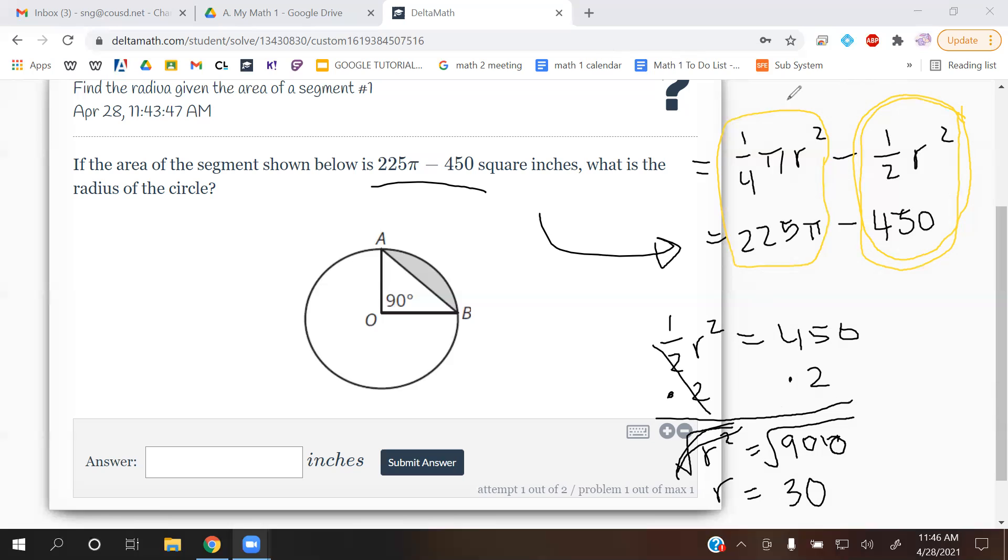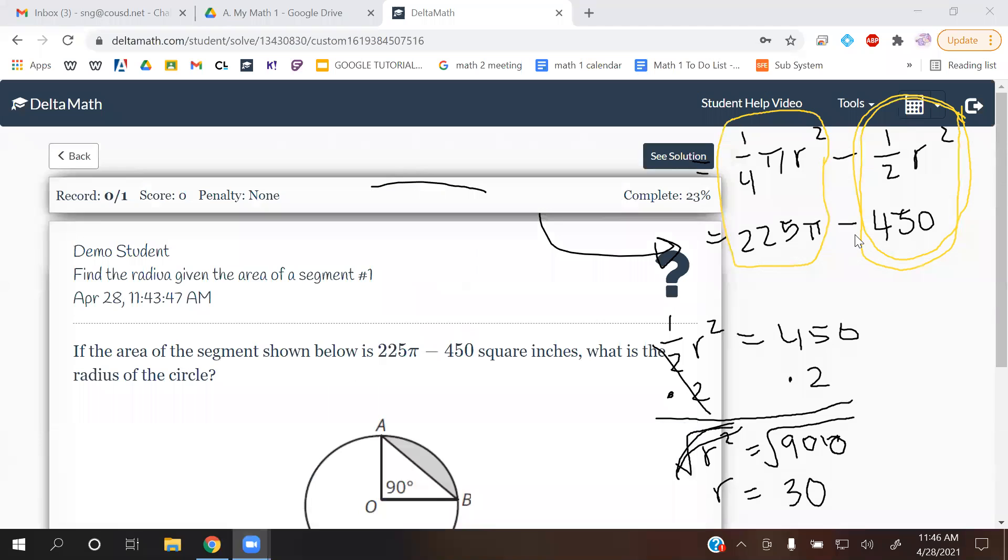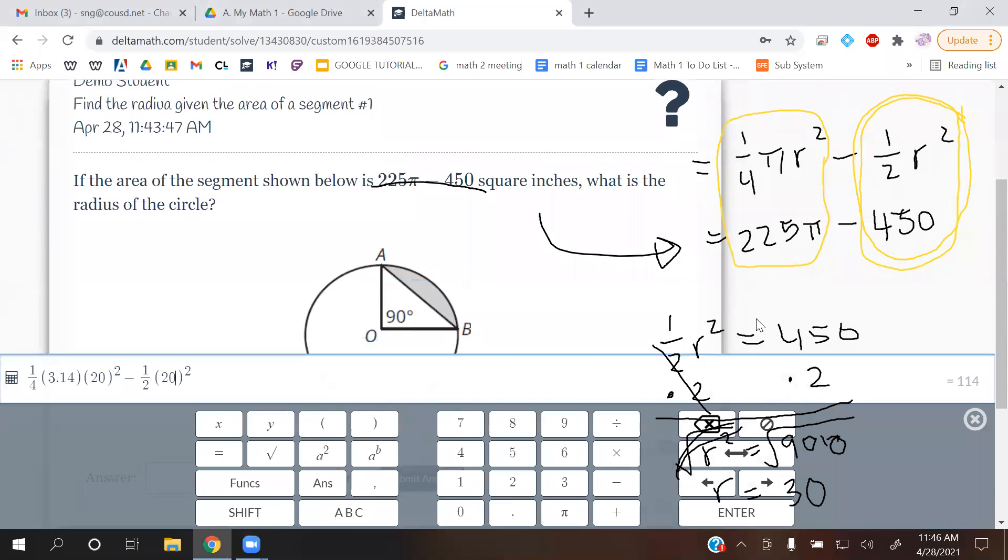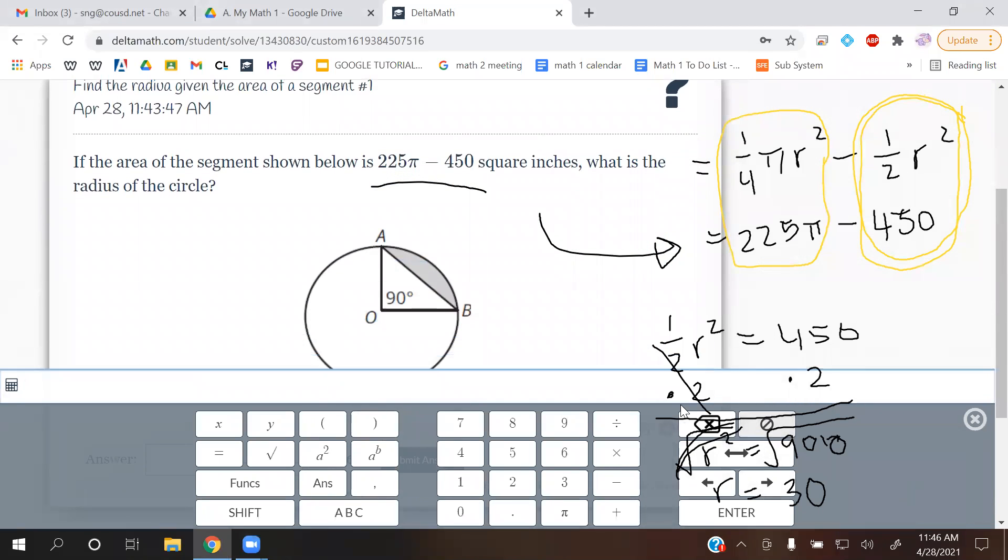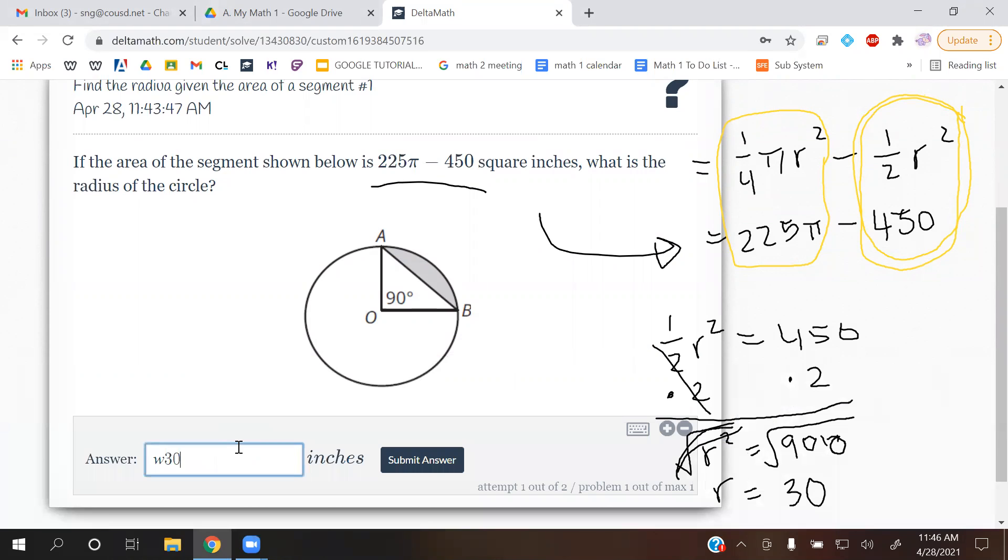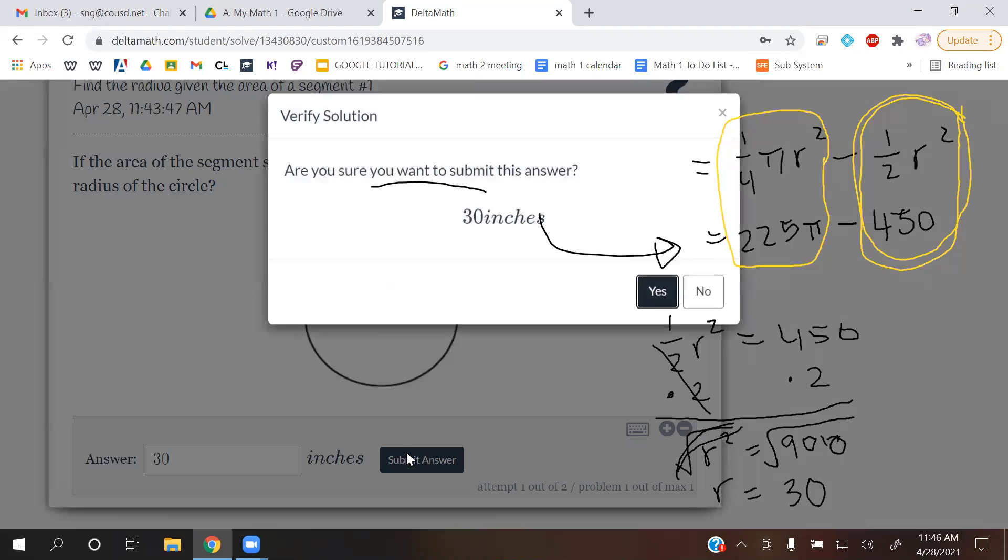By the way, if you don't know the square root of 900, you can always type that on the calculator. Let me find the square root of 900 is 30. So if you need a calculator, use delta math. It's right there for you. Just 30. There you go.